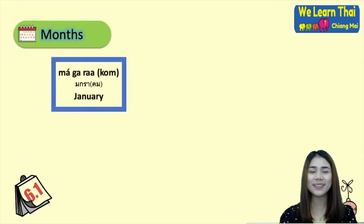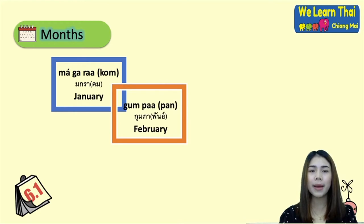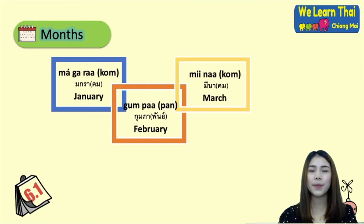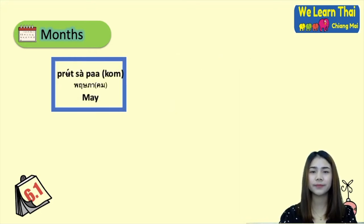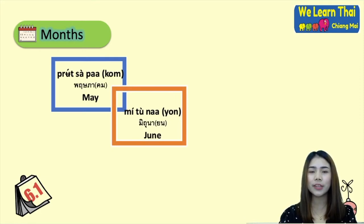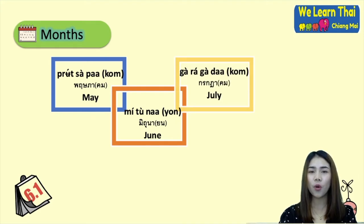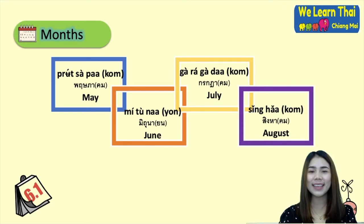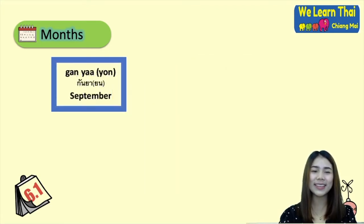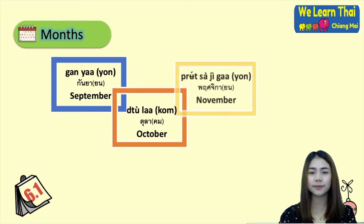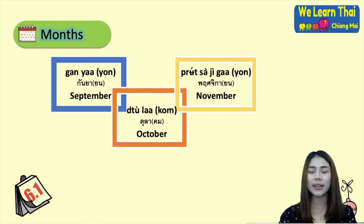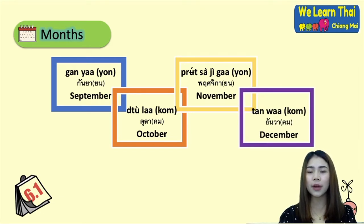For the months: มกราคม (makgarakom) January, กุมภาพันธ์ February, มีนาคม March, เมษายน April, พฤษภาคม May, มิถุนายน June, กรกฎาคม (karakadakom) July, สิงหาคม (sinhakom) August, กันยายน (ganyayon) September, ตุลาคม (tulakom) October, พฤศจิกายน (pritsatjigayon) November, and ธันวาคม (tanwakom) December.